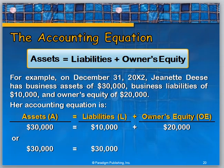Here we see the accounting equation, which shows the relationship among the accounting elements. On the left-hand side we see assets, and on the right-hand side we see liabilities plus owner's equity. The accounting equation must always be in balance — liabilities plus owner's equity must always add up to the same figure as assets. In this example, Jeanette Deese has assets of $30,000, liabilities of $10,000, and owner's equity of $20,000. So 10 plus 20 equals 30, and both sides equal $30,000 — it's in balance.